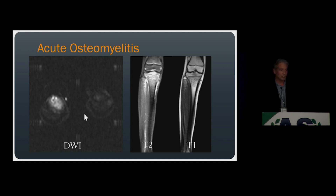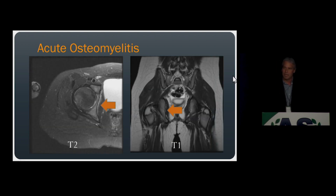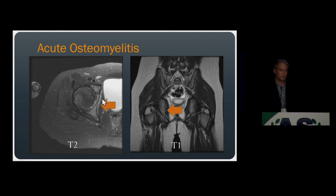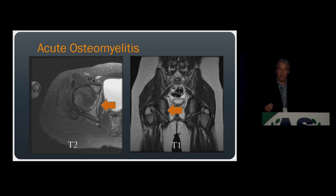Here's the same patient with a diffusion-weighted image showing increased signal representing restricted diffusion within the proximal tibia, consistent with hematogenous osteomyelitis. In this patient, DWI isn't particularly helpful because the findings were obvious on T2 and T1. However, consider a pediatric patient presenting with right hip pain, fever, and elevated inflammatory markers, with concern for right hip septic arthritis and osteomyelitis. On MRI, we see subtle periosteal reaction along the medial acetabulum, but the marrow is uniformly normal in signal on both T2 and T1. In this pediatric patient, diffusely uniform increased T2 signal is due to exuberant residual red marrow, which often makes it difficult to diagnose hematogenous osteomyelitis.